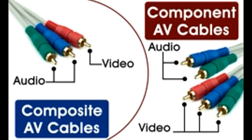It was the first video signal to include color in it. Composite video combines all three video components — namely luminance (Y), color (U), and V — via encoding into one signal, which is then transmitted over a single cable. For transmitting audio, additional cables and connectors are required. It too is an analog video format.